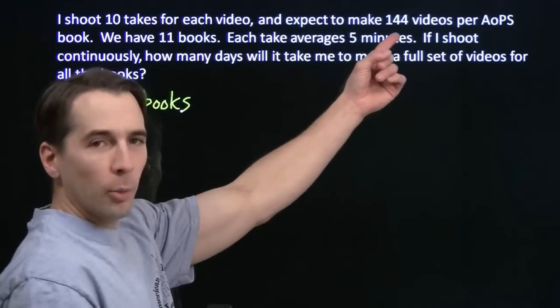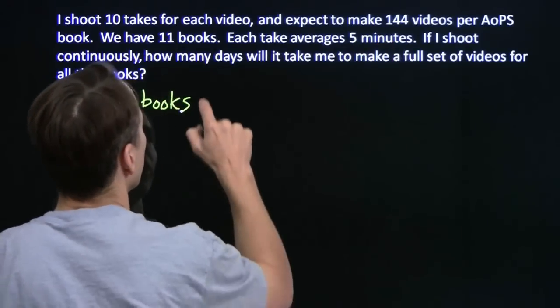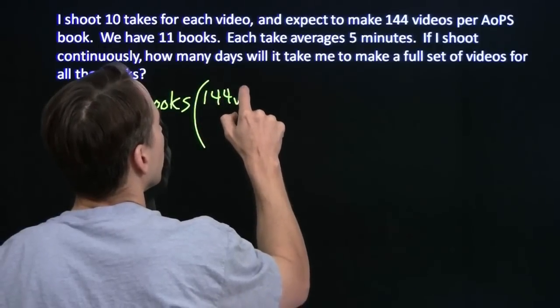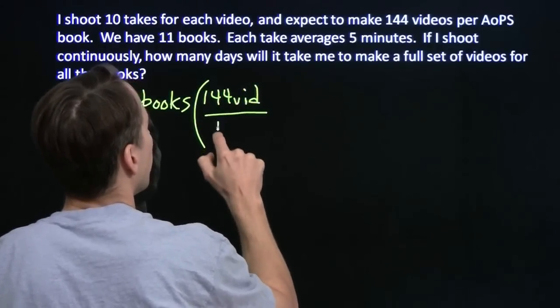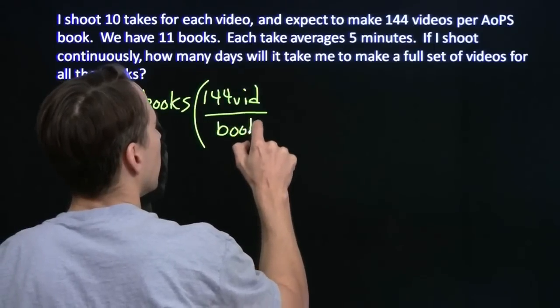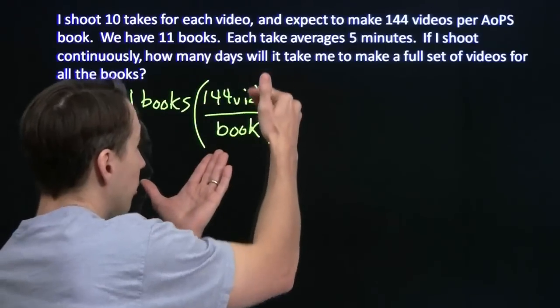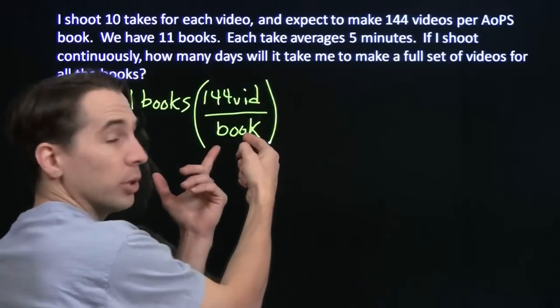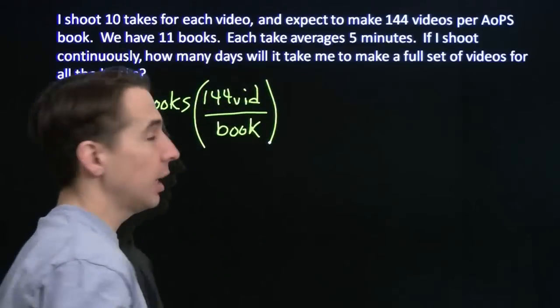And for each of these books, I want to make 144 videos. That's 144 videos per book. I'm lining this up with conversion factors here, 144 videos. That's one book. This conversion factor equals 1. I put the books in the denominator because I want the books to cancel out.